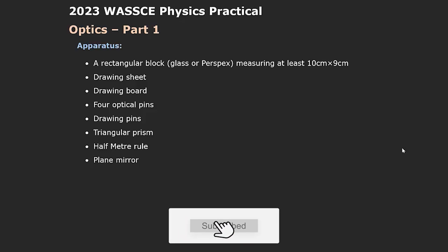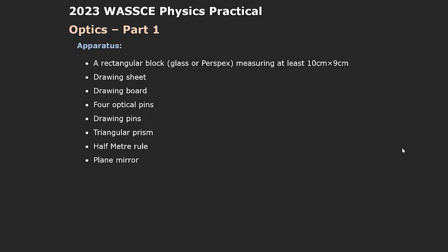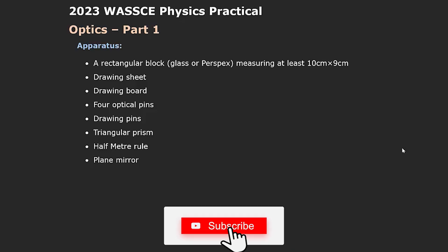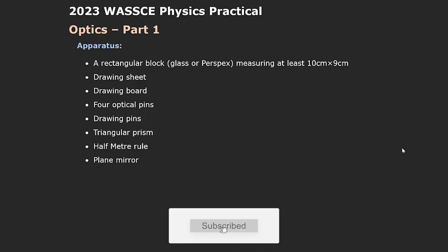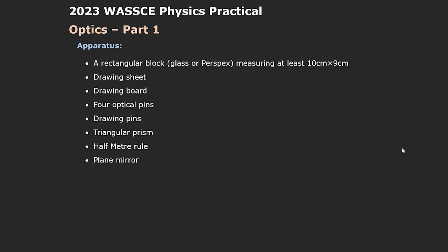I'm going to talk about two most likely experiments that could be constructed from this apparatus. The first is an experiment involving a rectangular block prism with a plane mirror. The second is a triangular prism with a plane mirror. I'm going to explore the theory and experimental procedure behind both.